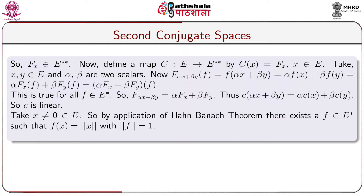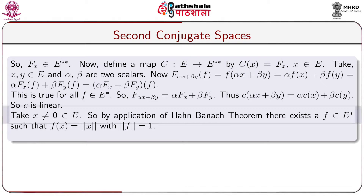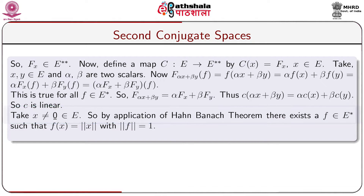This is true for all f belonging to E*, so C(αx + βy) = αC(x) + βC(y). Thus C is additive. Similarly, C(λx) = λC(x), so C is linear. Take x ≠ 0 belonging to E. By the Hahn-Banach theorem, there exists a functional f belonging to E* such that f(x) = ‖x‖ with ‖f‖ = 1.